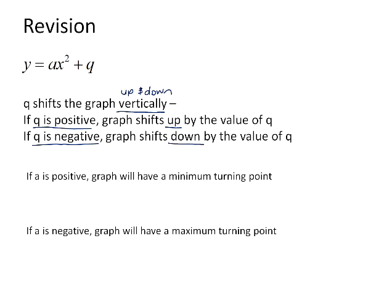The a value determines the shape of the graph. If the a value is positive, the graph will have a minimum turning point — in other words, it will turn at the bottom of its range. If the a value is negative, the graph will have a maximum turning point, which means that it will turn at the top of its range.